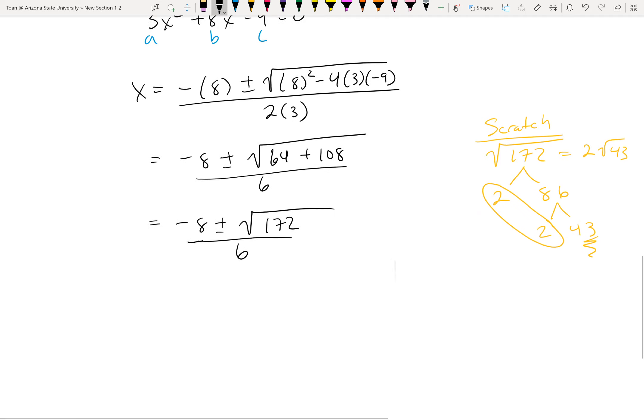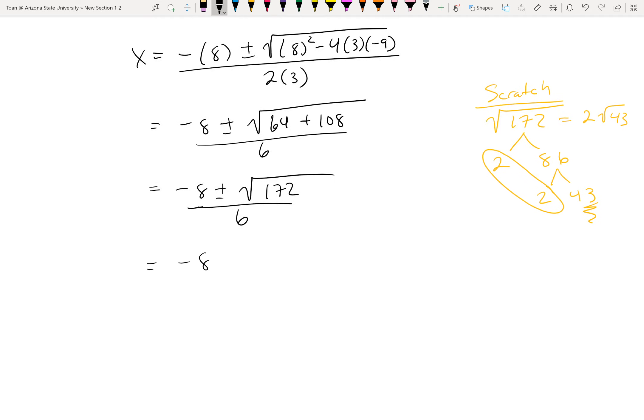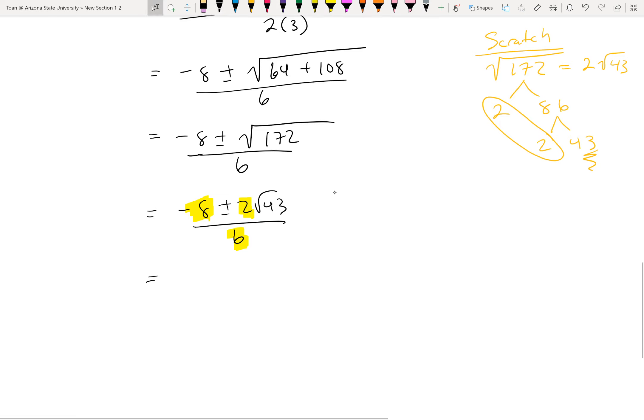So this guy here is -8 ± 2√43 over 6. So let's look at all the outside numbers. Is there anything we can divide out? And hopefully we can see that we can divide out a 2. So our final answer would be -4 ± √43 over 3.